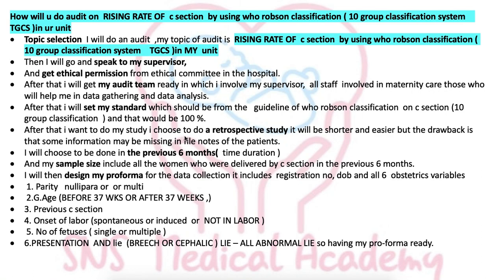I choose to do a retrospective study — it's shorter and easier, but the drawback is that some information may be missing in patient file notes. Alternatively, a prospective study is better quality but time-consuming, taking at least six months. For Robson classification, I choose a prospective approach done over the previous six months — this is the time duration, because too long or too short is associated with failure of the audit. My sample size includes all women delivered by C-section in the previous six months.